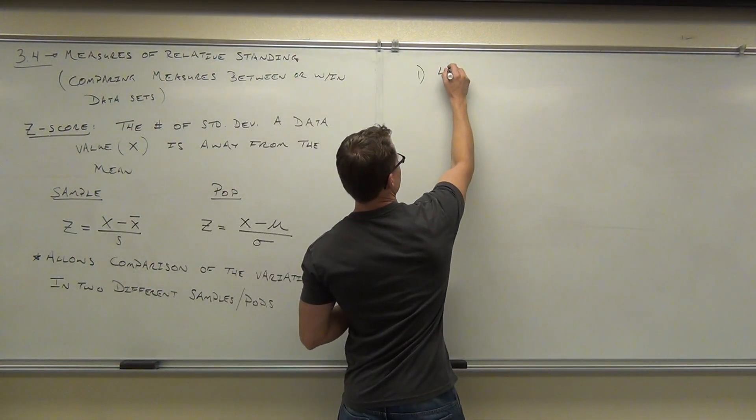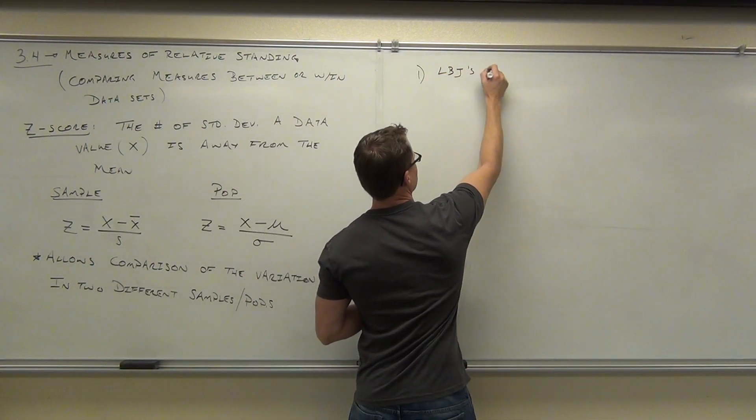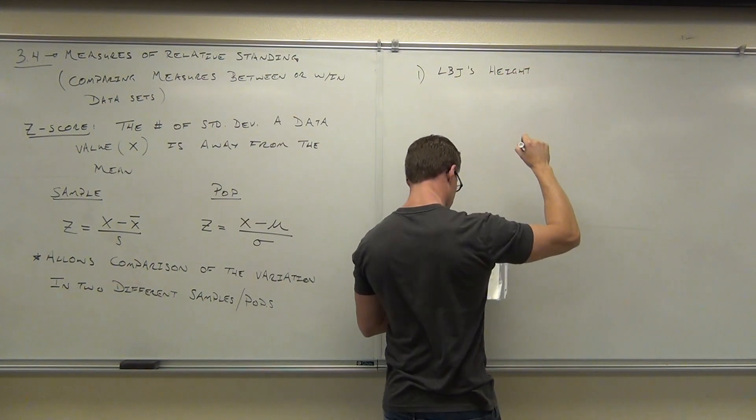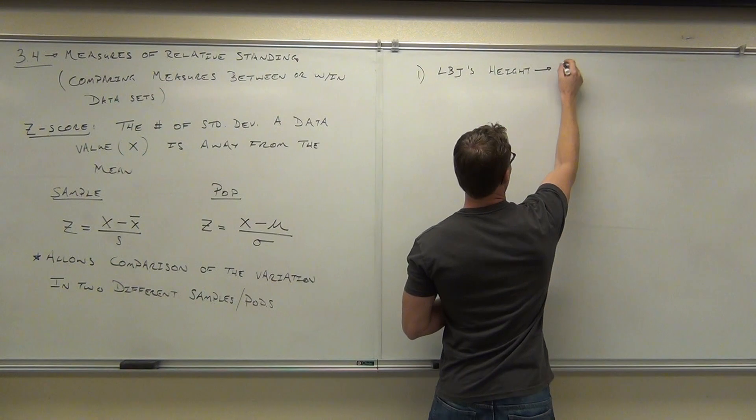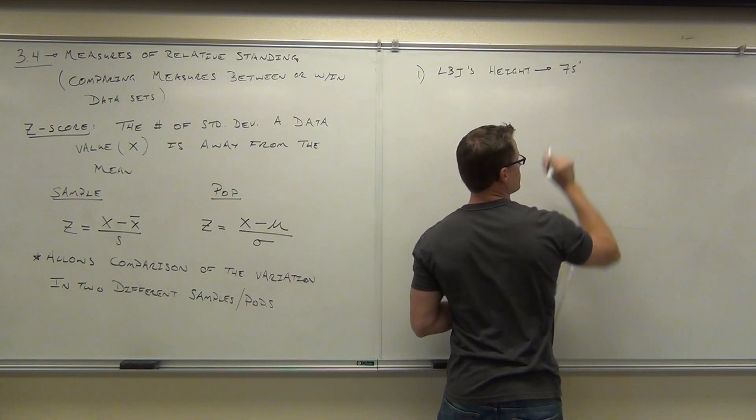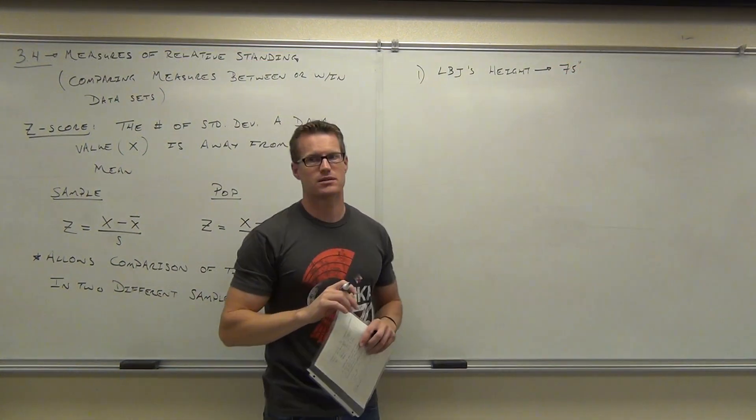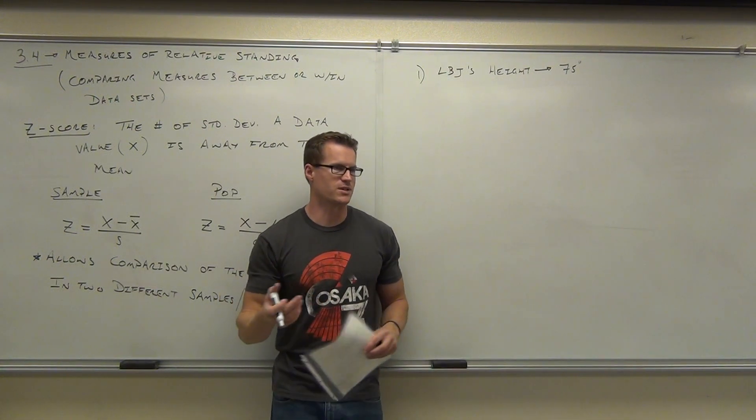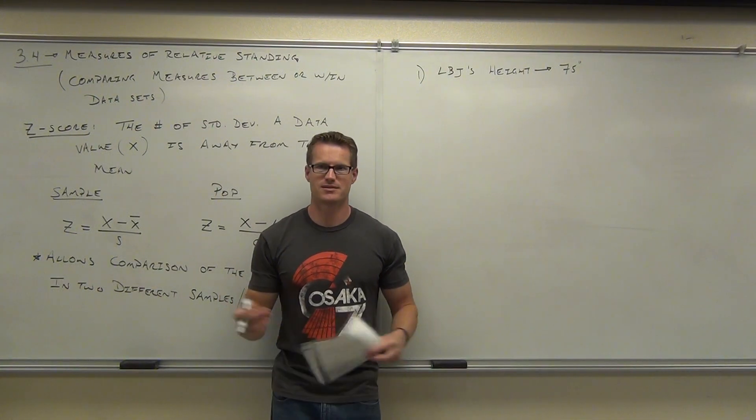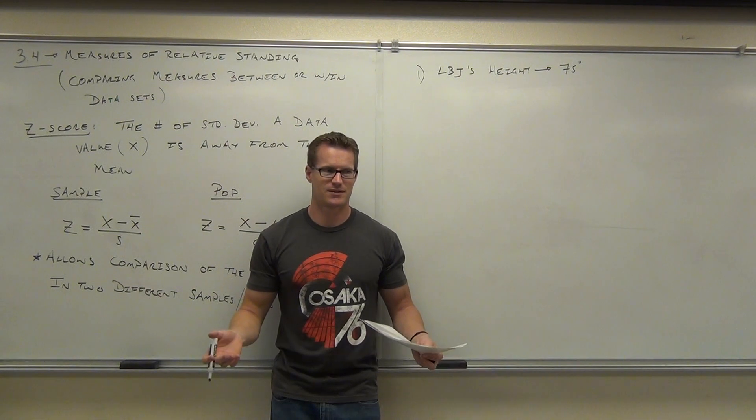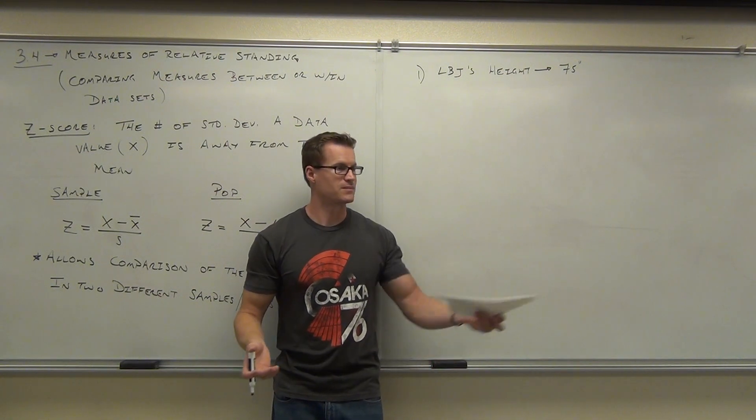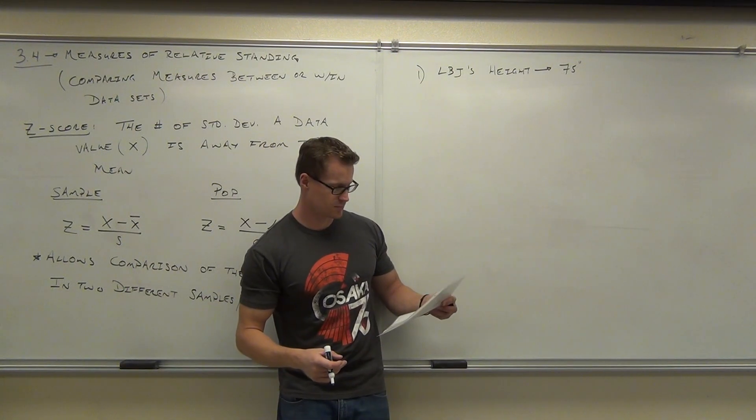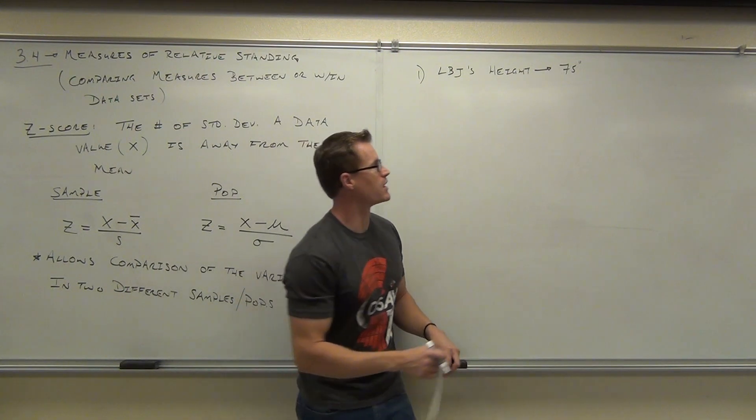Lyndon B. Johnson, let's say LBJ. He was 75 inches tall. How tall is that? Because we don't say I'm 64 inches tall or whatever. We say I'm like 6'4". He was 6'4", actually. Let me change that.